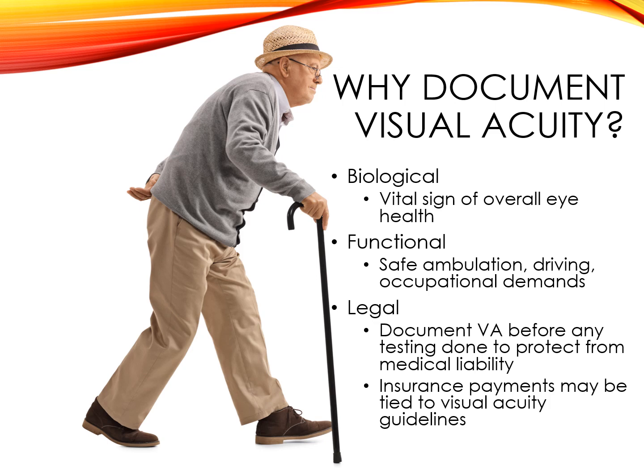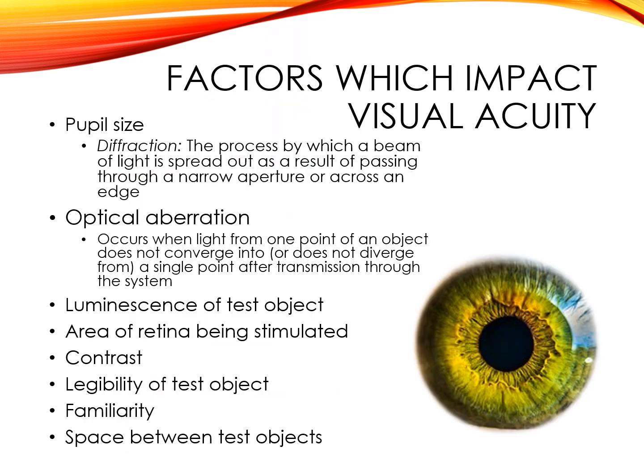Also, many times insurance payments may be tied to visual acuity guidelines. Visual acuity is impacted by many different factors. Large pupils allow more light to pass through into the eye, which stimulates the retina more. However, this does have a disadvantage because it affects resolution due to optical aberrations that increase in the eye. Small pupils reduce optical aberrations because less light is passing through. However, resolutions are diffraction limited. Therefore, good visual acuity is a mid-sized pupil of approximately 3 to 5 millimeters, which is a compromise between the diffraction and aberration limits.